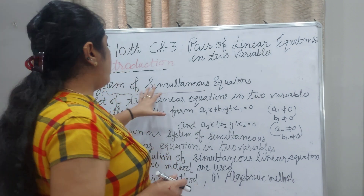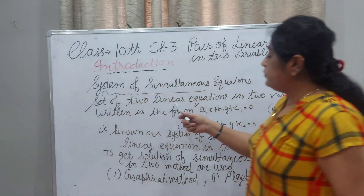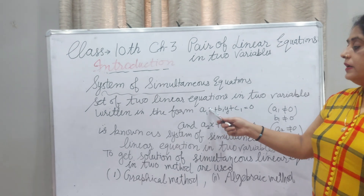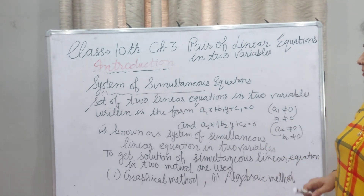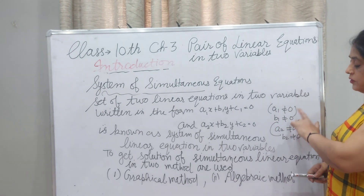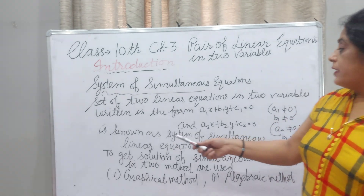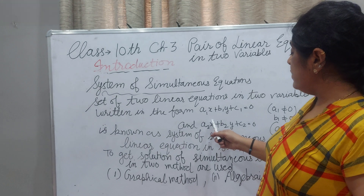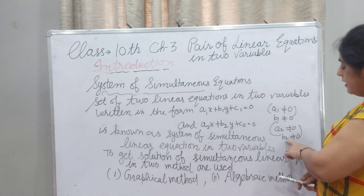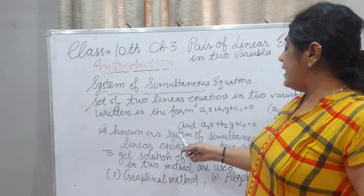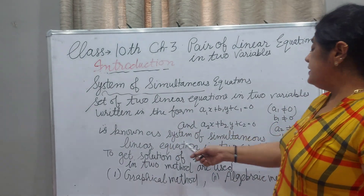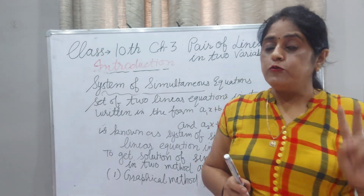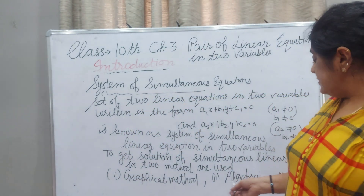In a system of simultaneous equations, a set of two linear equations in two variables is written in the form: A₁X + B₁Y + C₁ = 0, where A₁ ≠ 0 and B₁ ≠ 0; and A₂X + B₂Y + C₂ = 0, where A₂ ≠ 0 and B₂ ≠ 0. This is known as a system of simultaneous linear equations in two variables. To get the solution of this system there are two methods: graphically and algebraically.